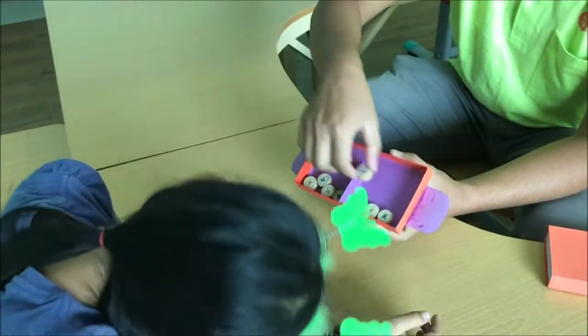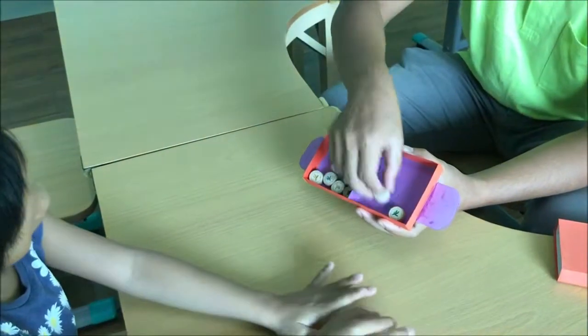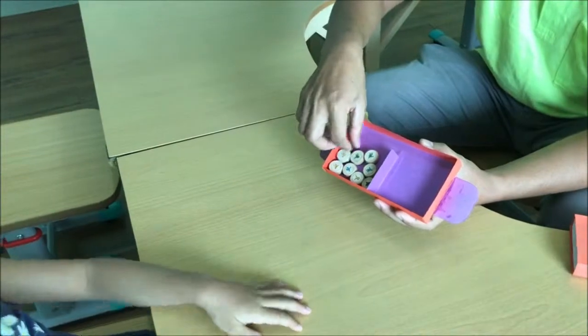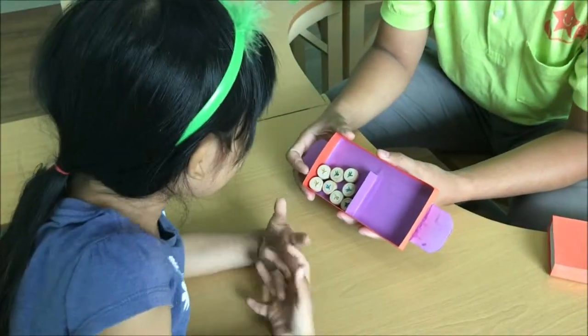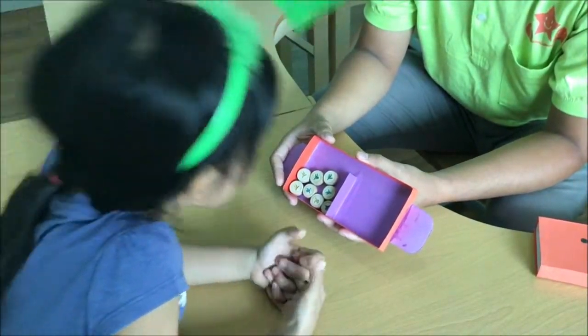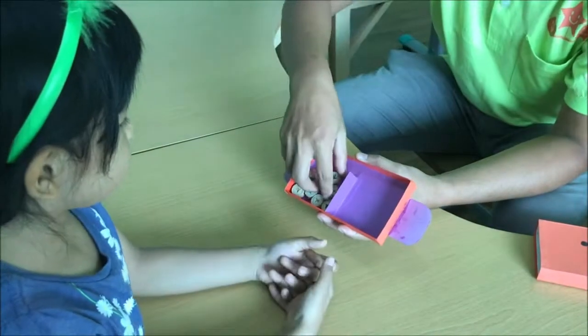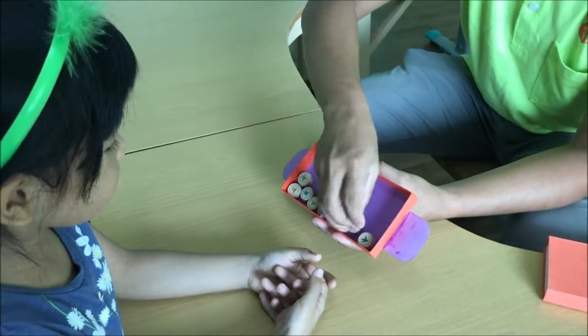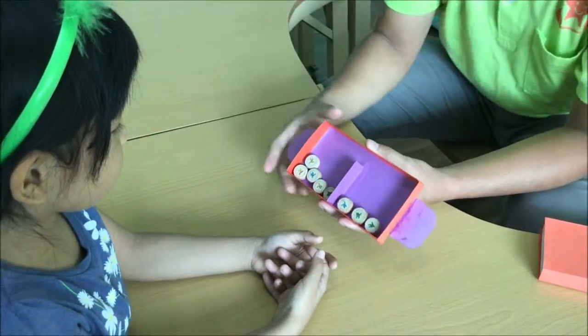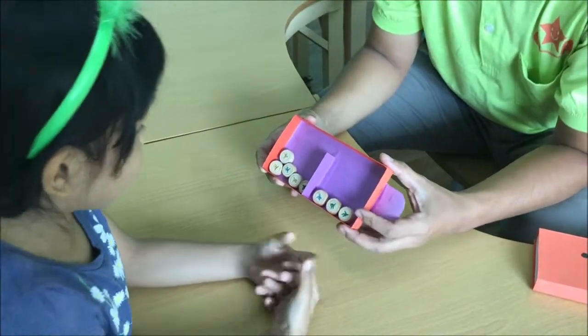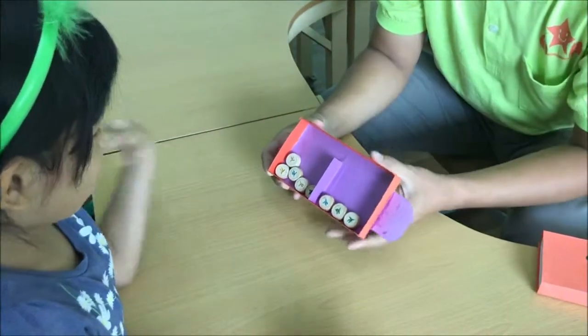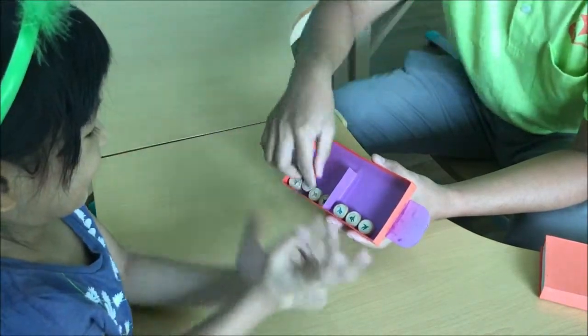And this one. How many can you see? 8. Very good. How many can you see at this part? 3. And this one? 5. All? 8. Very good.